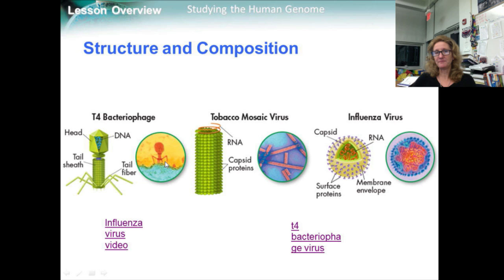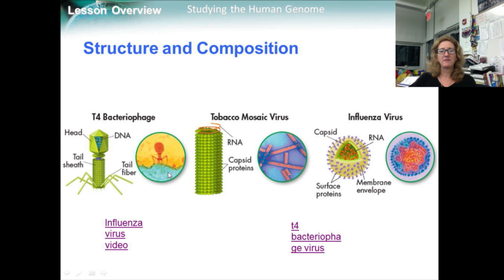Most viruses have proteins in the surface membrane or capsids that bind to receptor proteins in the host cell. The proteins trick the cell to take the virus — or in some cases just its genetic material — into the cell. Once inside, the viral genes are eventually expressed and they destroy the cell. Most viruses infect only a very specific kind of cell. Plant viruses infect plant cells, most animal viruses only affect certain related species of animals, and viruses that infect bacteria are called bacteriophages.